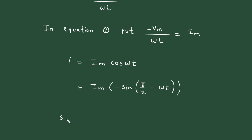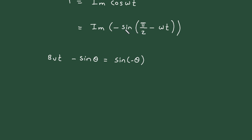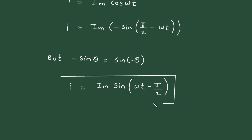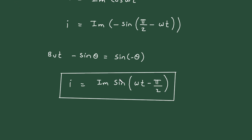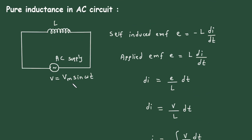We know that minus sin(θ) equals sin(minus θ). Applying this formula, we get I equal to Im sin(ωt minus π/2). So the equation for current is I equal to Im sin(ωt minus π/2), and we already have the equation for voltage: V equal to Vm sin(ωt).